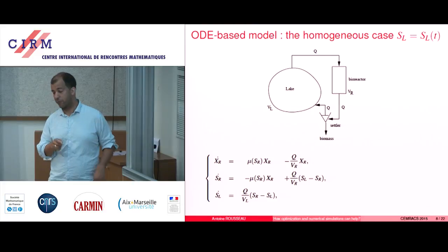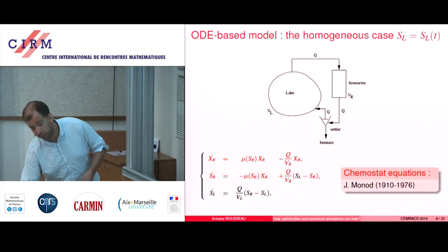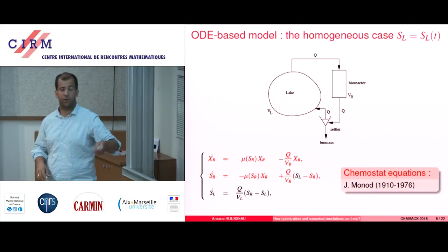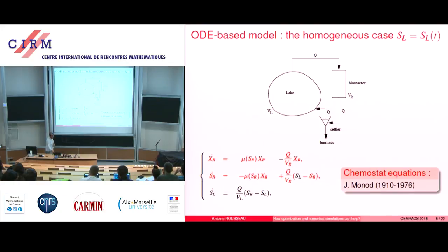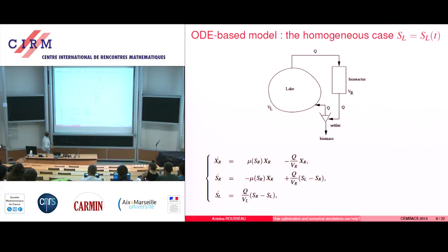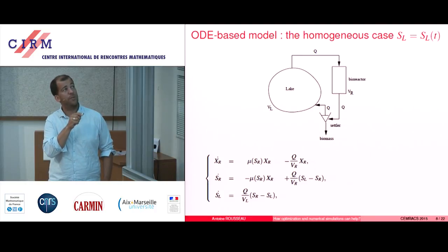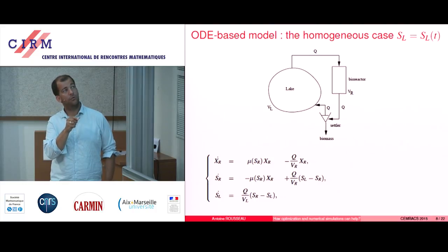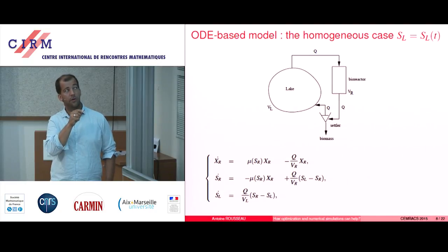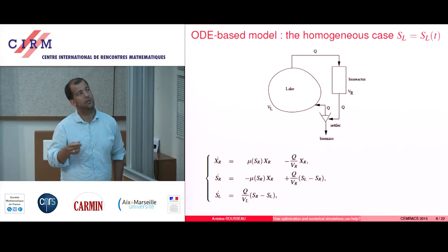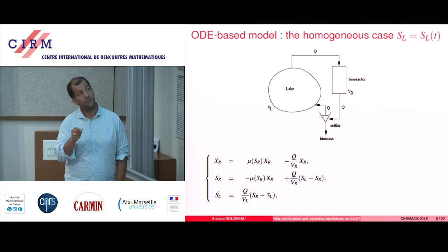So these are the equations of the chemostat. This is the work of Jacques Monod and many other authors in the US and in England in particular. The evolution of the biomass in the bioreactor is a growth term — the more nutrient you have, the more you have of XR, and also it's linear with XR. It's exponential growth in a way. And this corresponds to what you extract from the bioreactor — you pump some water here, so you take this quantity of biomass at the end.